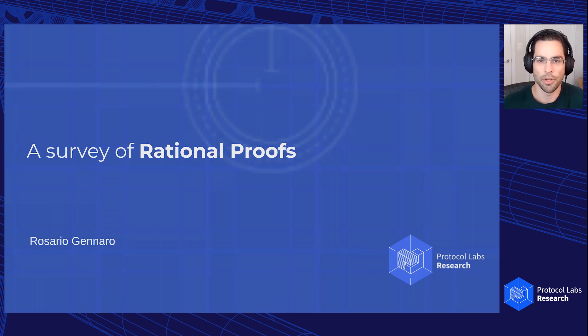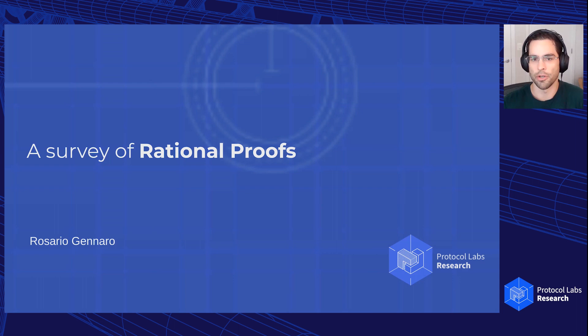Welcome to today's research talk. Our speaker today is Rosario Gennaro. Rosario received his PhD from the Massachusetts Institute of Technology in 1996 and was a researcher at the IBM T.J. Watson Research Center before joining the City College of New York, where he served as the director for the Center for Algorithms and Interactive Scientific Software. Rosario is currently a research scientist in Protocol Labs' CryptoNet Lab. His research focuses on cryptography and network security, and more generally on theoretical computer science. His talk today is a survey of rational proofs. Rosario, thanks for joining us.